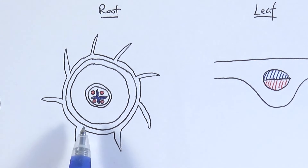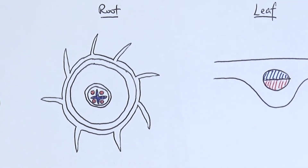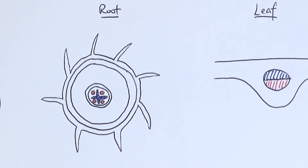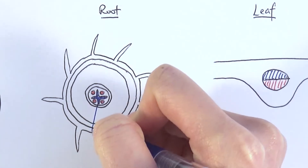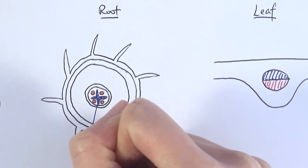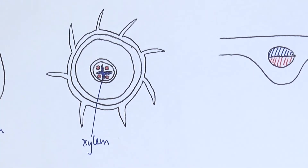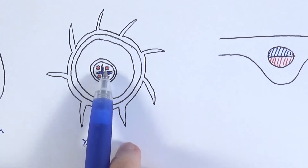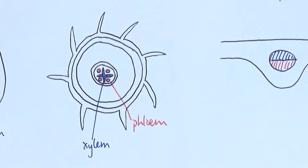This is the cross-section of a root, and we know it's a root because of the root hairs extending out of it to increase the surface area to absorb water and mineral ions. First of all, the xylem is on the inside. One way to remember is that the xylem starts with an X, so it's kind of like a cross shape or an X shape structure in the middle of the roots. And then the phloem exists sort of around the xylem.